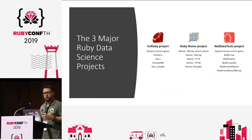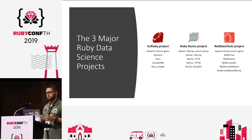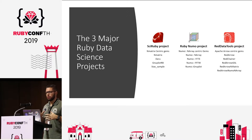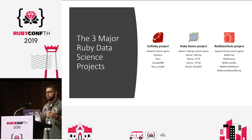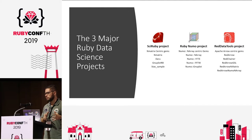What's the current state of data science in Ruby? In Ruby, we have a big advantage and a big problem at the same time. In Python, all the data science effort is around the SciPy project. In Ruby, we have three different projects with three different approaches. Most of the data science tools are under the SciRuby project, which has many NMatrix-centric gems, the Daru project for data frames, GnuPlotRB, StatSample, and many other libraries.